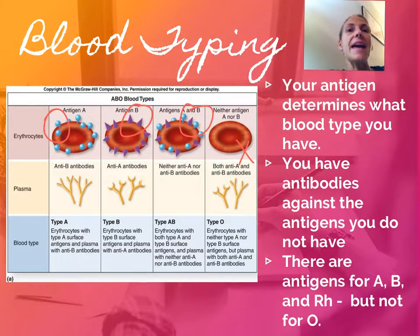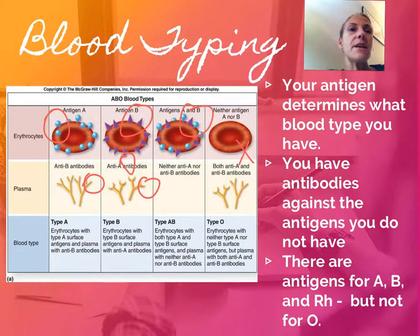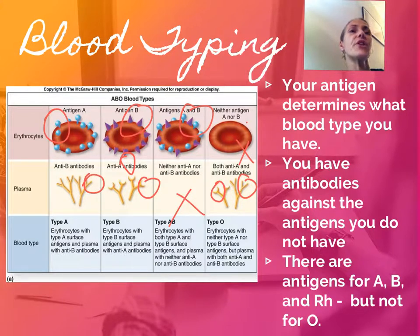Type A has the A antigen but not B, so it has B antibodies. Type B blood has A antibodies. Type AB has both antigens present and no antibodies whatsoever, which allows you to receive anybody's blood type — making it the universal recipient. Type O blood has neither A nor B antigens, so it has both A and B antibodies.